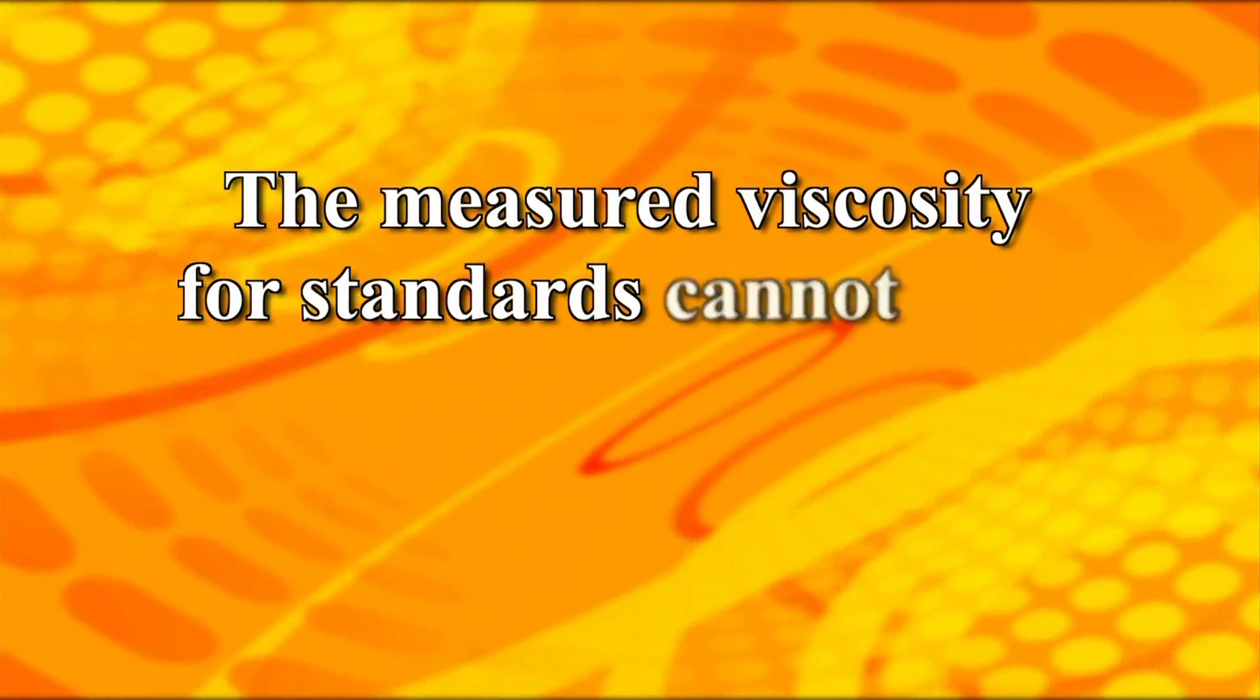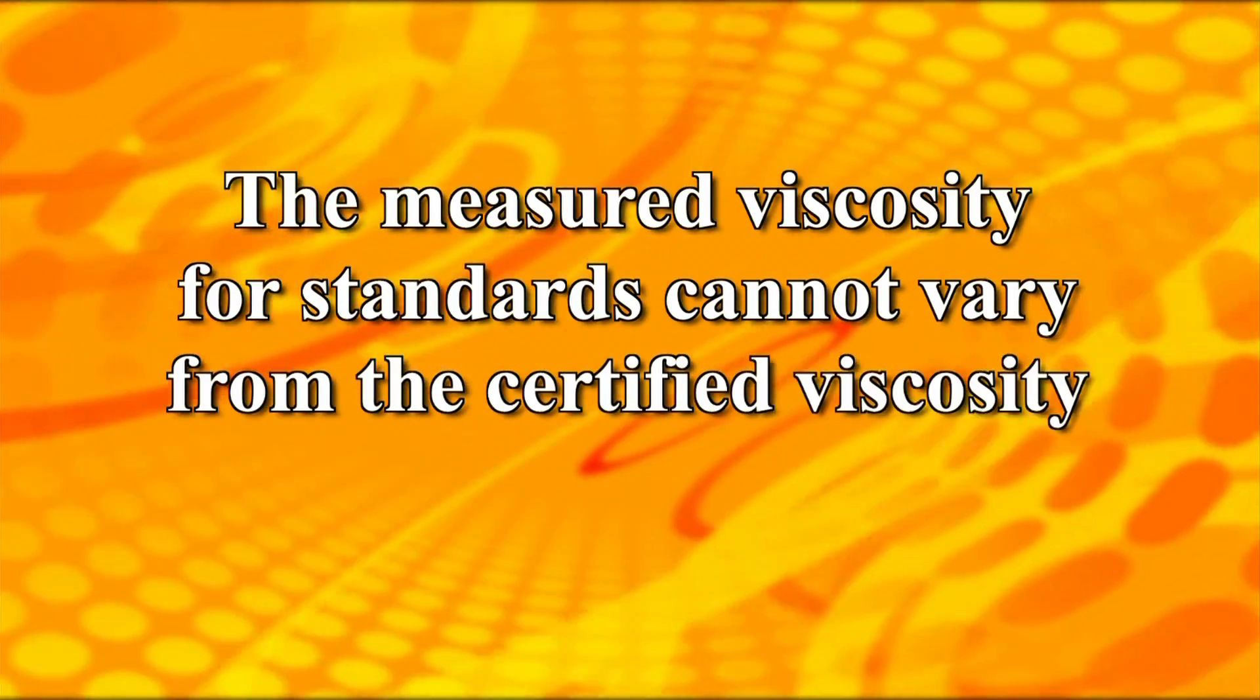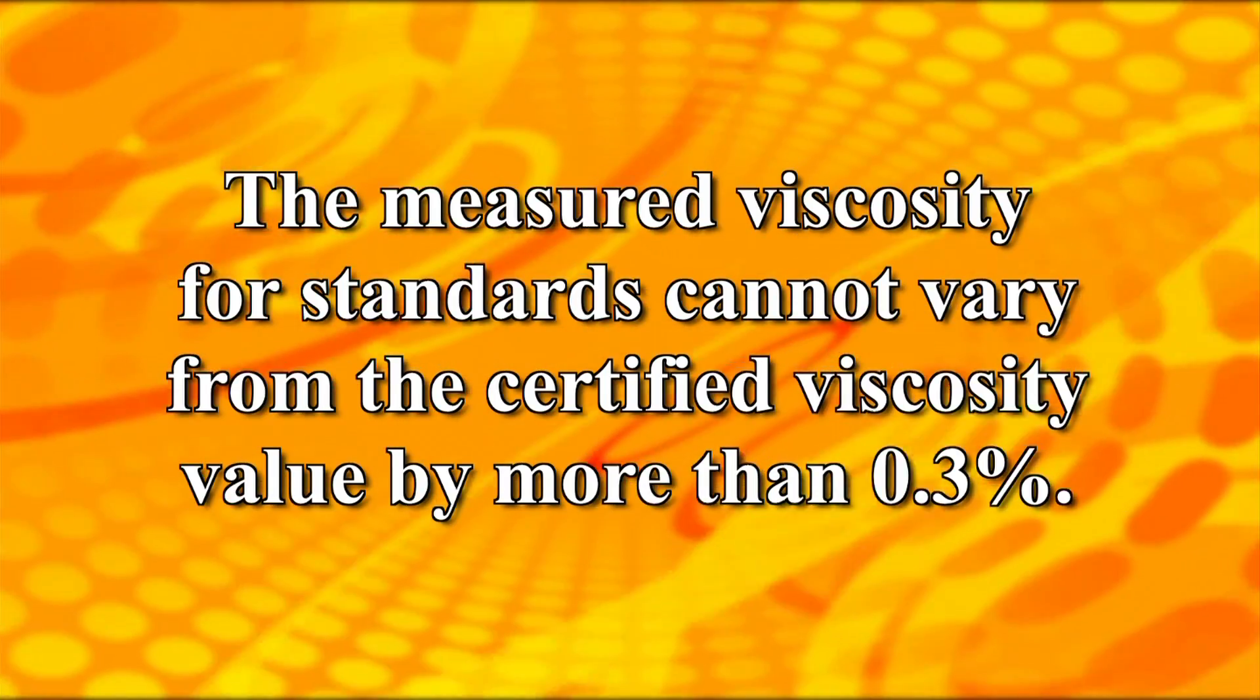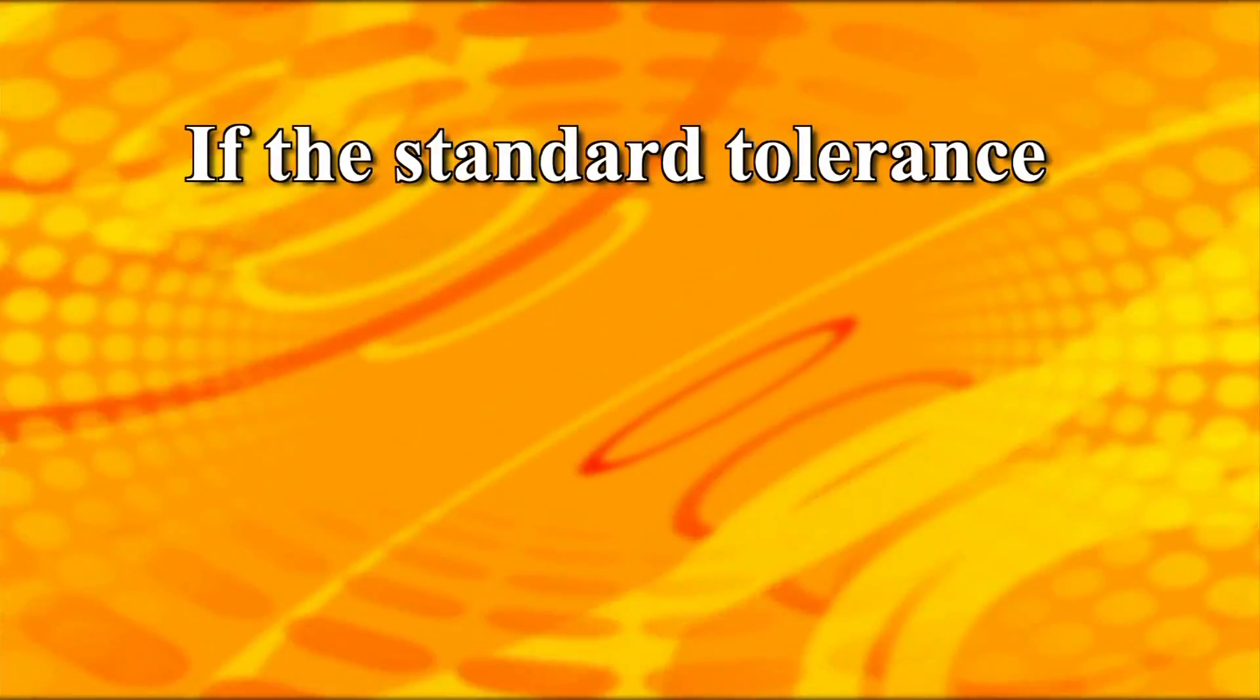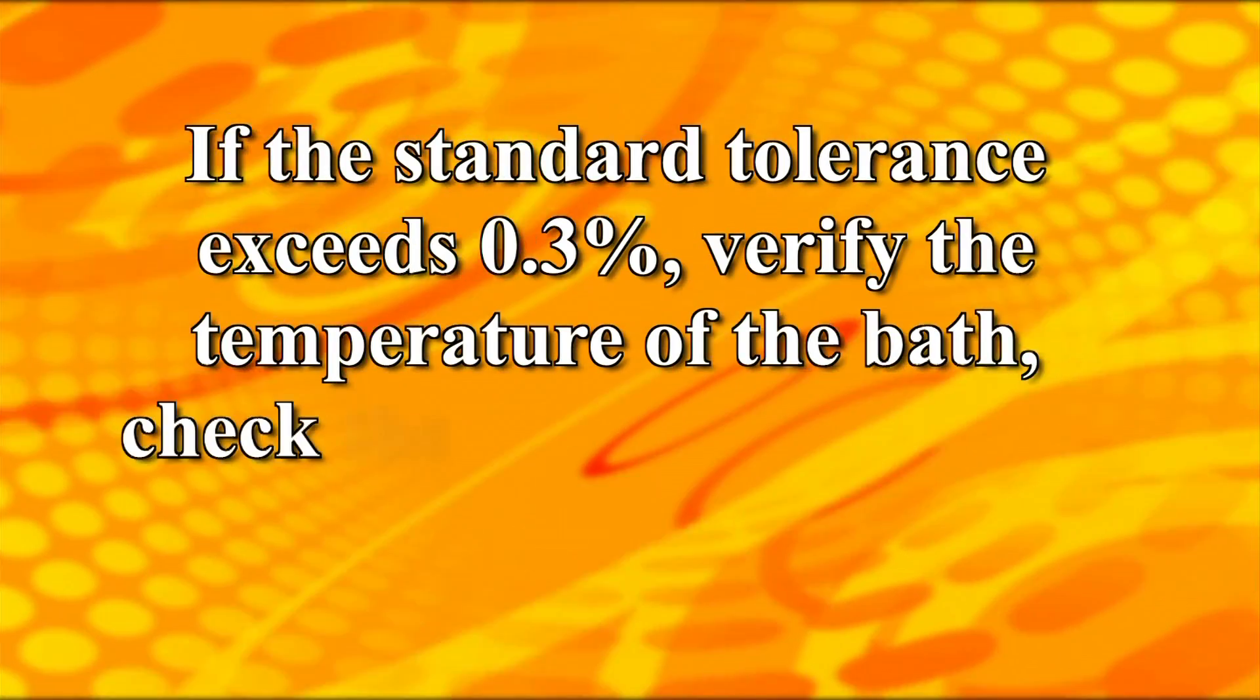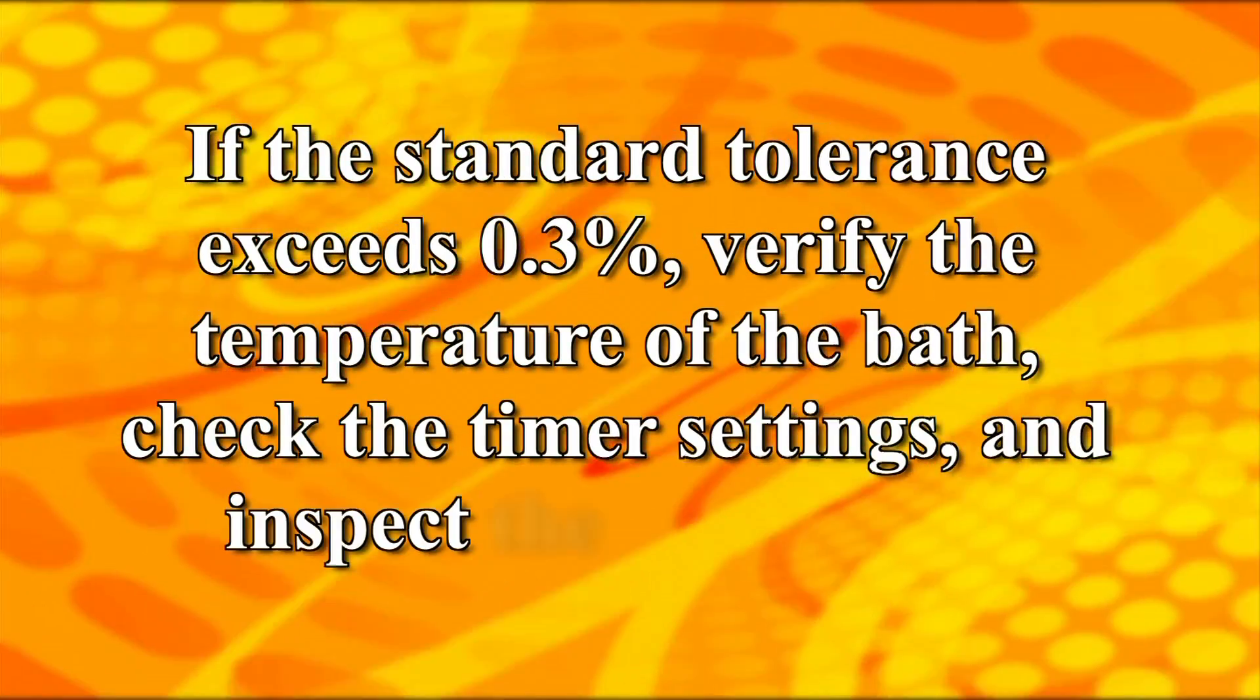The measured viscosity for standards cannot vary from the certified viscosity value by more than 0.3%. This is the standard tolerance. If the standard tolerance exceeds 0.3%, verify the temperature of the bath, check the timer settings, and inspect the viscometer.